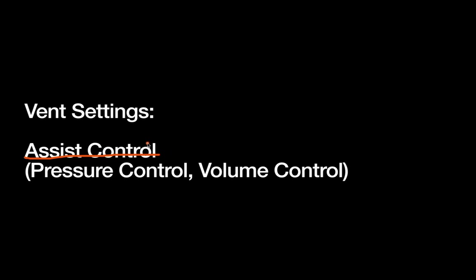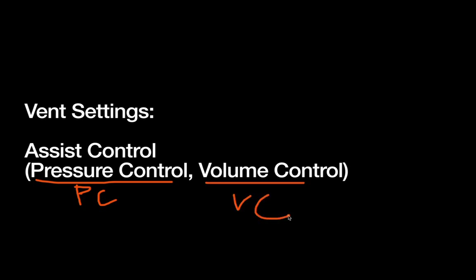The next group are the assist control vent settings, sometimes called conventional ventilation modes. When thinking about assist control, think about the patient having very little say in what's going on. The assist control is where you set the machine and the machine does what it's going to do regardless of what the patient does. This isn't often used by surgeons, but it's important as the foundation for some later modes.